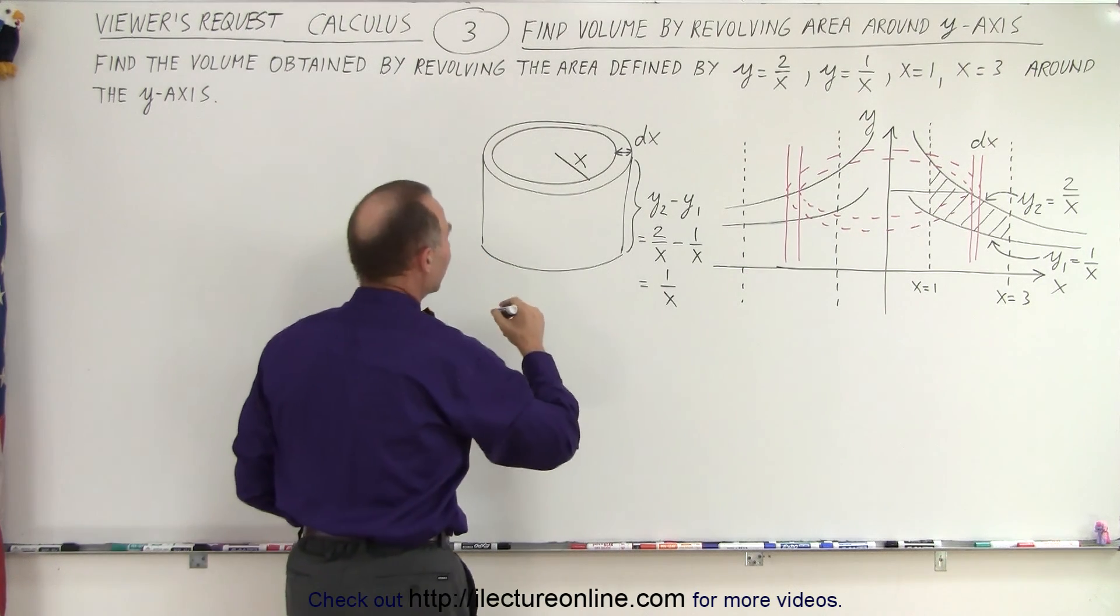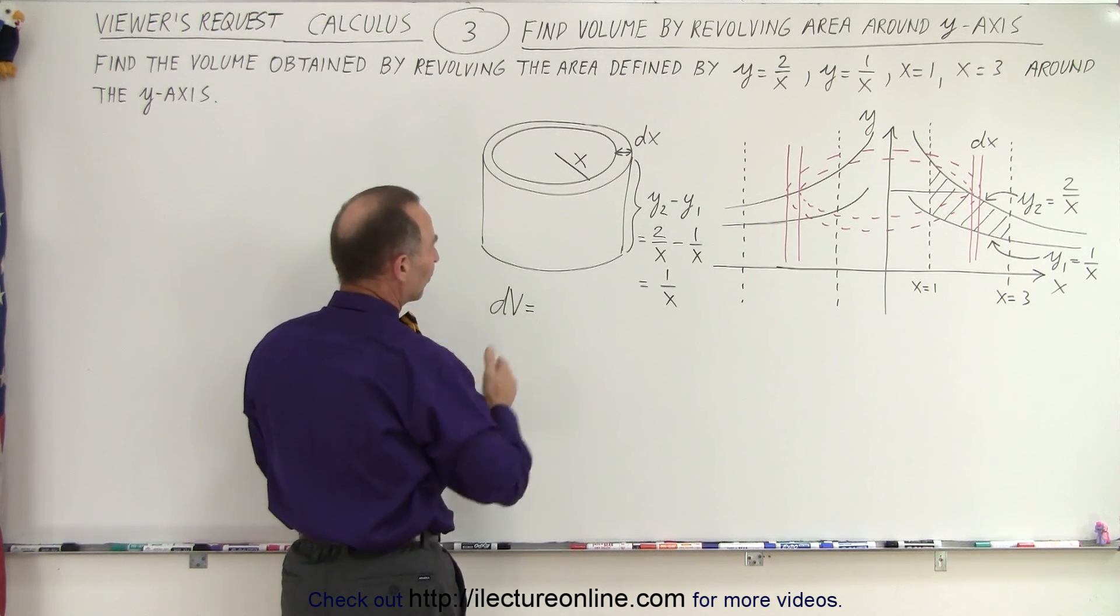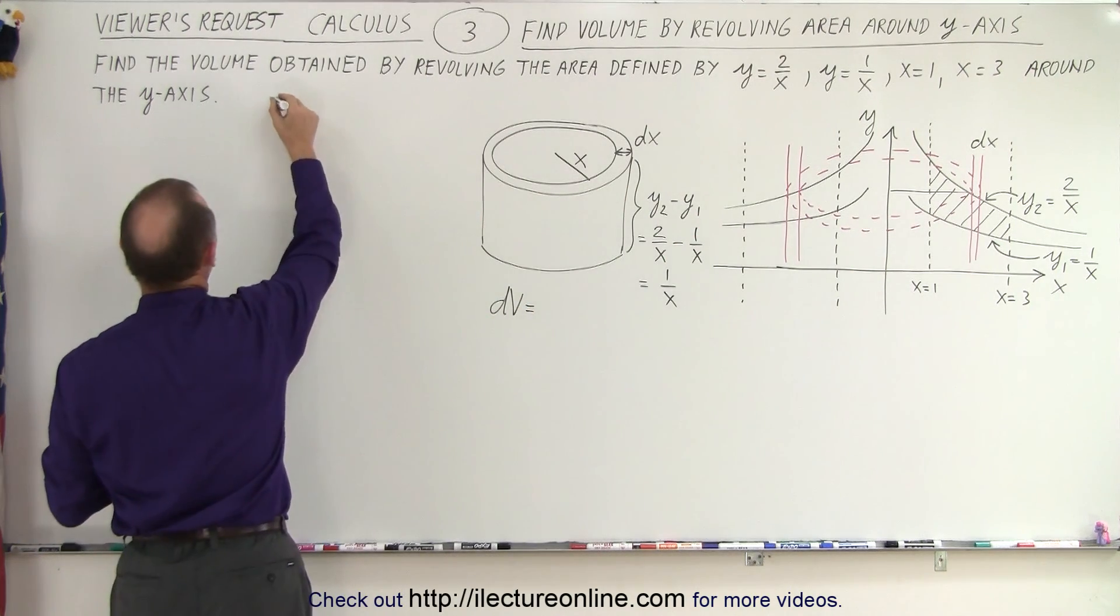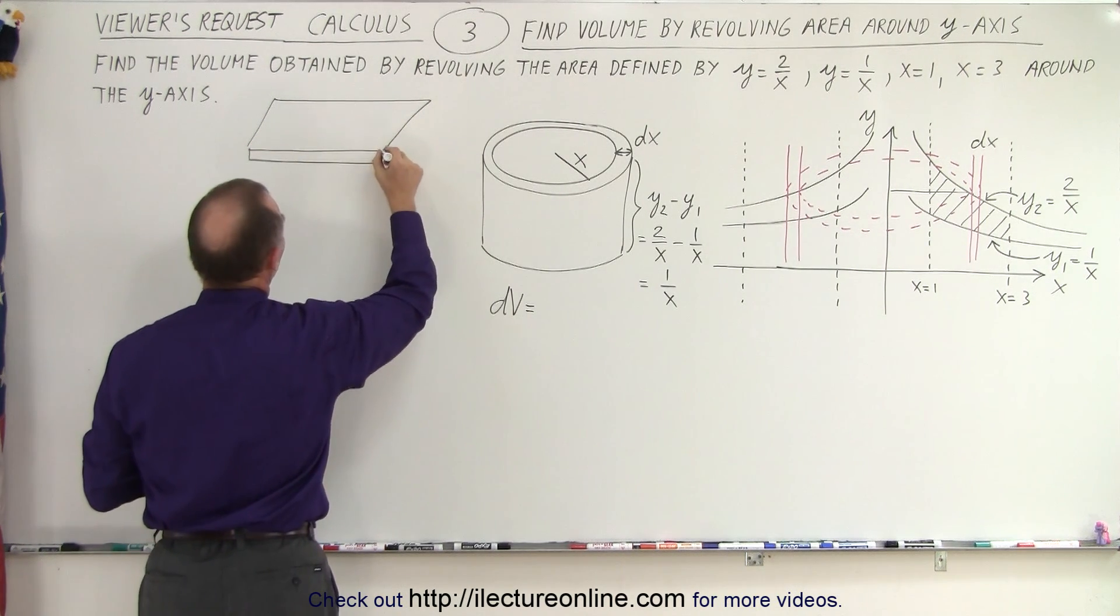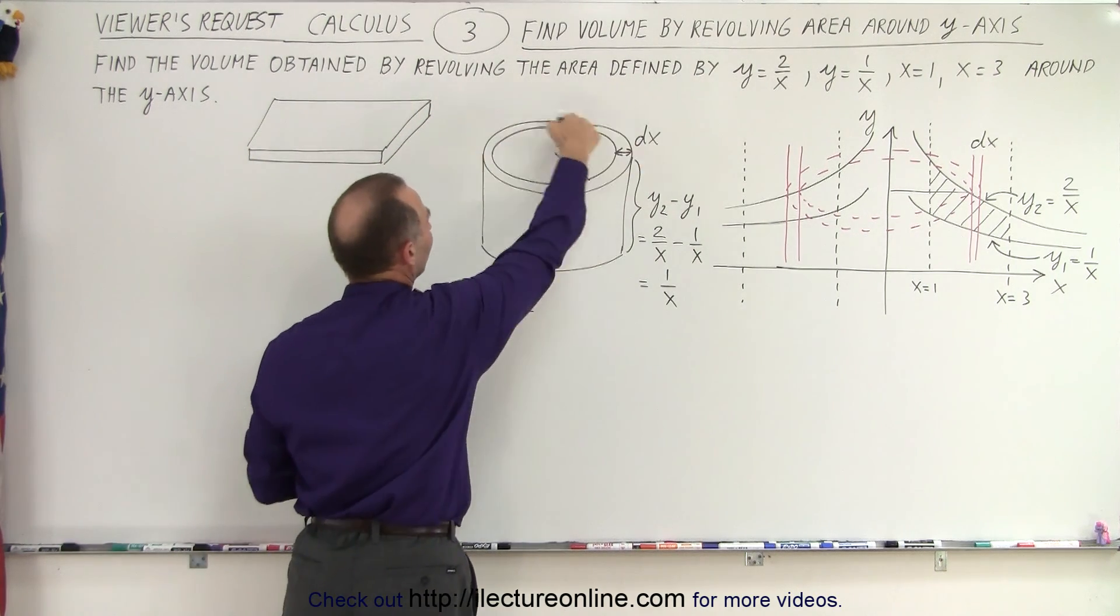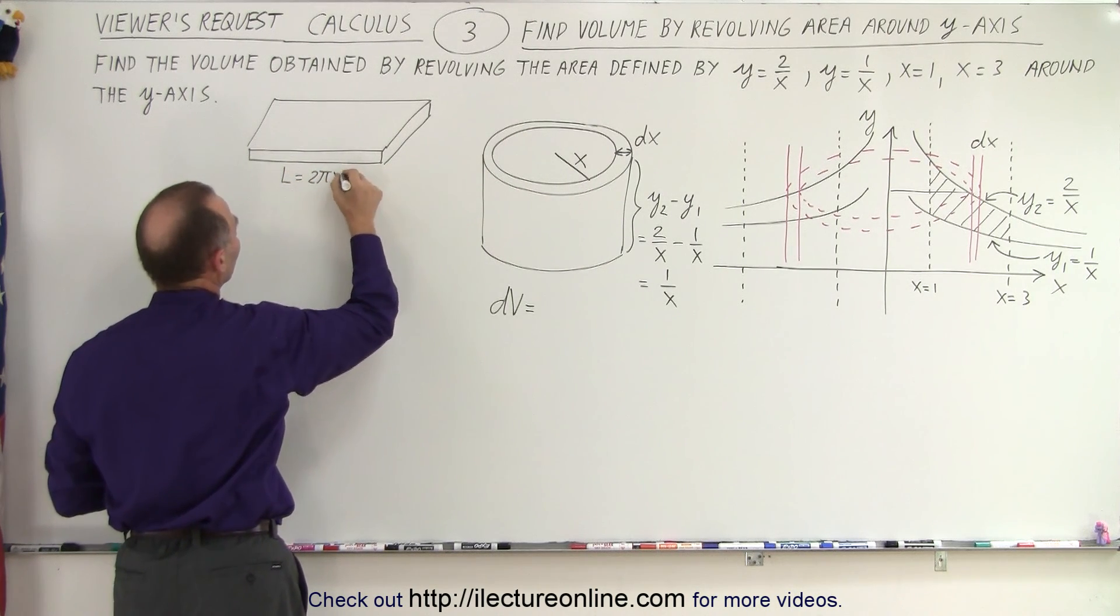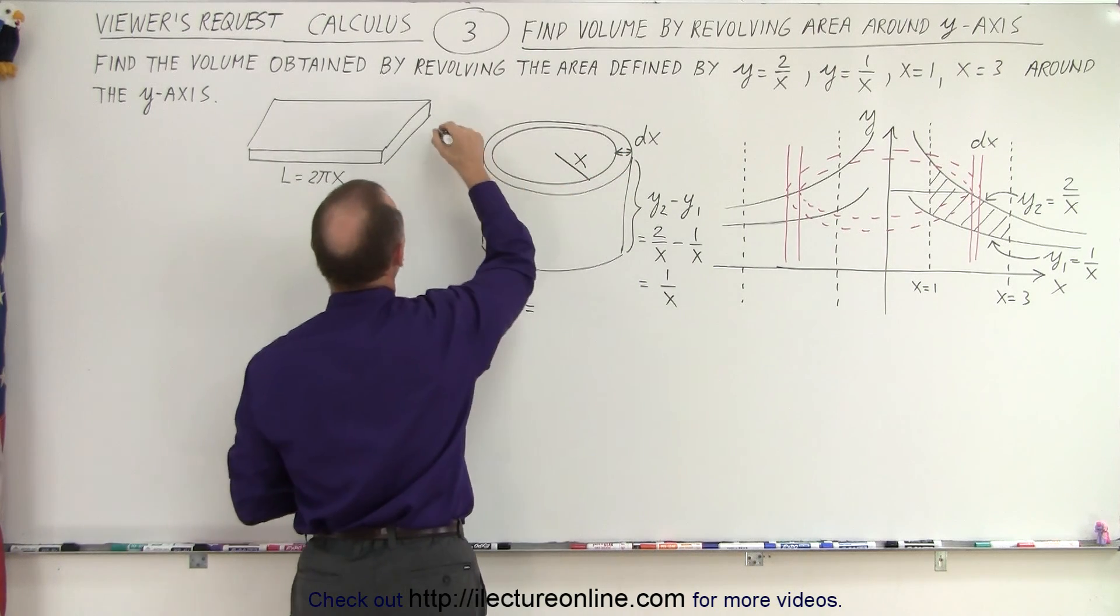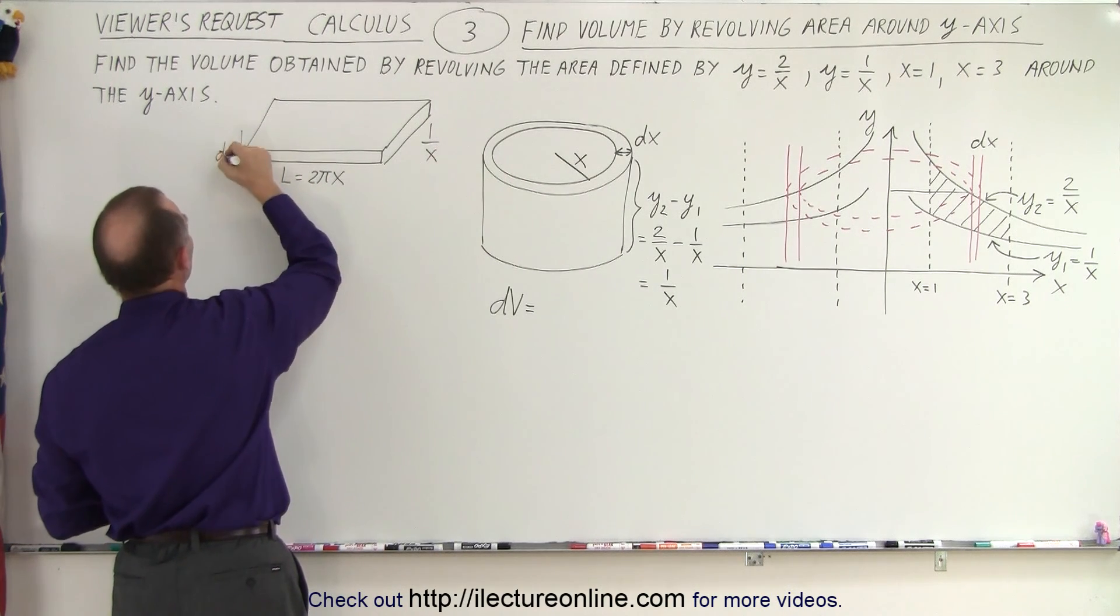So how do we define dV? dV is equal to, if you think about it this way, if you were to slice the cylinder and lay it flat, you end up with something that kind of looks like this. It would be like a rectangular volume. And the length of this would be equal to the circumference. So the length is equal to 2π times the radius, which in this case is x. And the width right here would be the height, and that would be 1 over x. And the thickness, the thickness like this, that would be equal to dx.